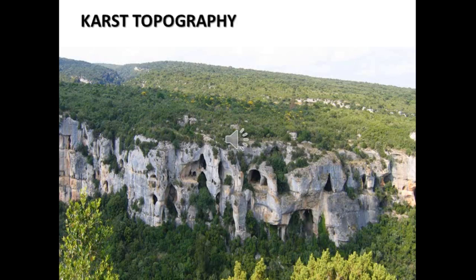As an agent of gradation, underground water creates distinct landforms in limestone regions. This is called karst topography. Underground water also acts as an agent of gradation — it mostly acts as an erosional agent. It creates distinct landforms in the limestone region. Wherever limestone exists, it dissolves in water and thus forms a region called karst topography.